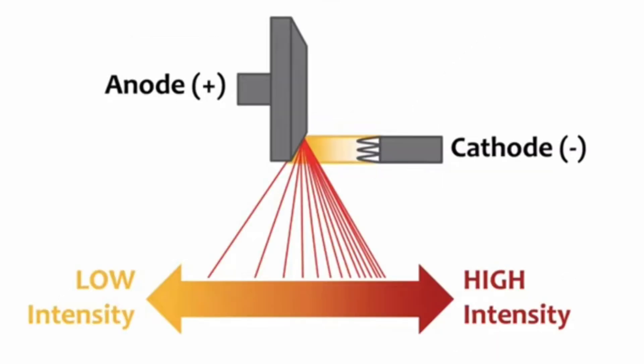Cathode se aap log dekhein — low intensity, high intensity ko dekhein. Toward the cathode side zyada x-rays aa rahi hain, yani jo radiation hamare paas aa raha hai woh zyada intensity ke hotay hain. Toward the anode side wahan absorption zyada hota hai, toh is wajah se hum kehtay hain ke cathode side pe intensity zyada hota hai.